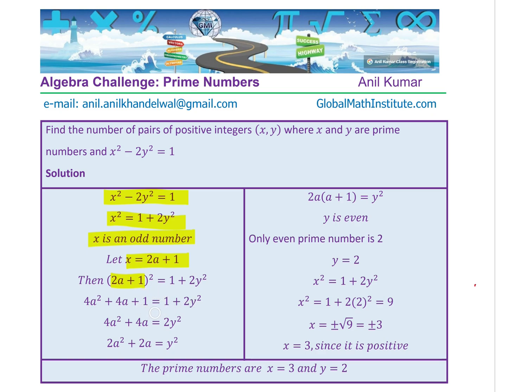Simplifying, one and one cancel out. We get 4a² + 4a = 2y². Dividing by 2, we get 2a² + 2a = y², and that means that y is even. If y² is even, then y is also even. The only prime number which is even is 2.